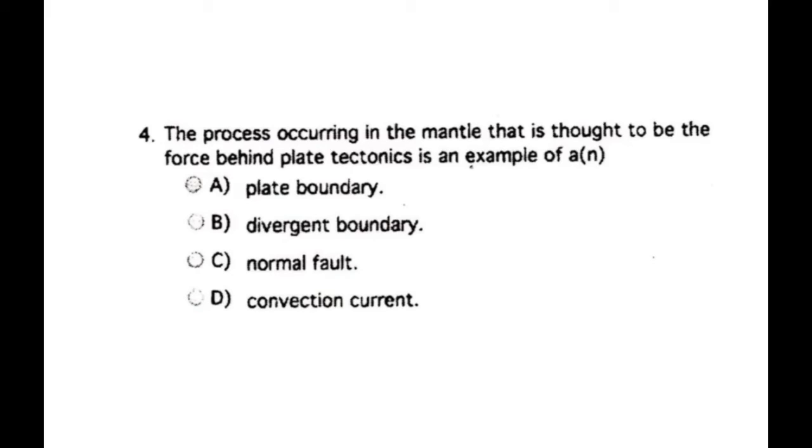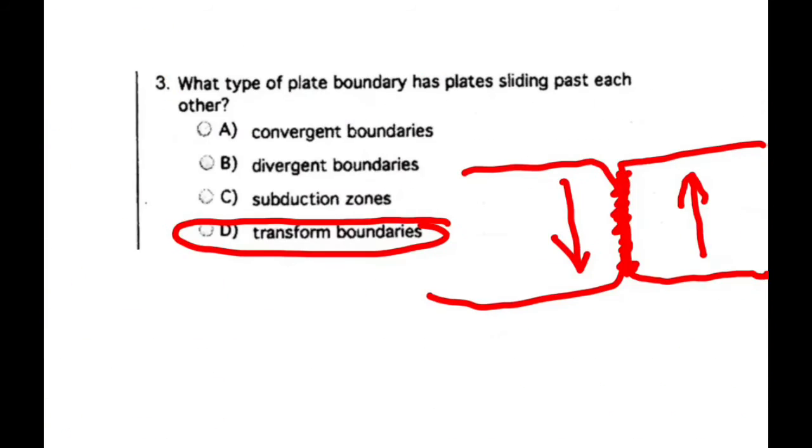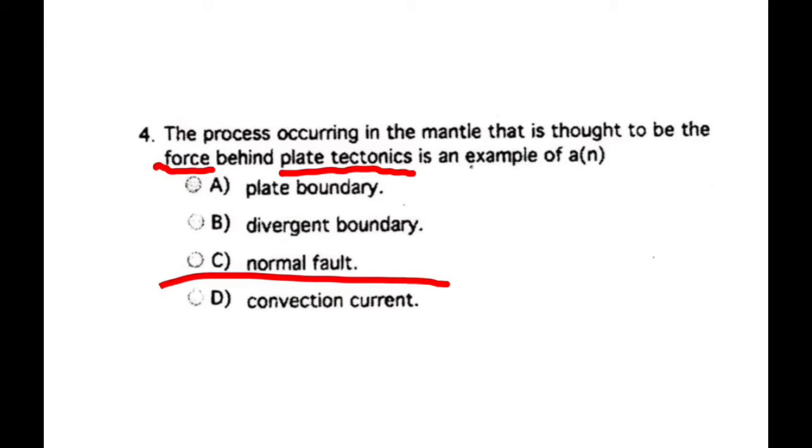Number four, the process occurring in the mantle that is thought to be the force behind plate tectonics is an example of a plate boundary, divergent boundary, normal fault, or convection current? Now what I was talking about back on this one here is we had these currents moving around moving the plates, and we call all those currents convection currents in the mantle.